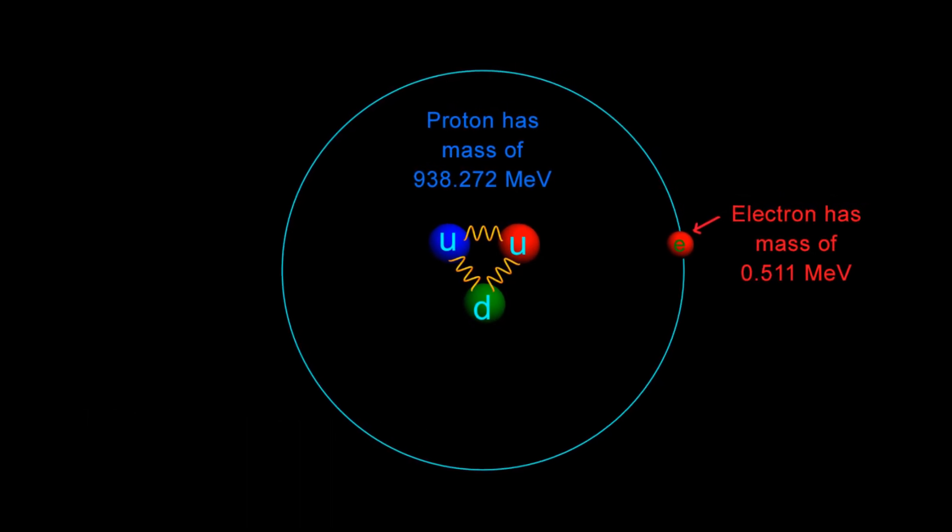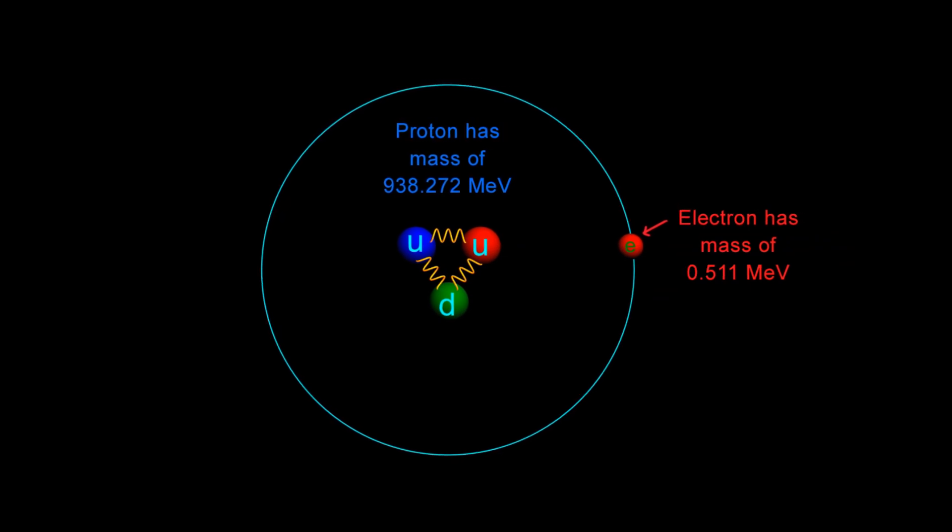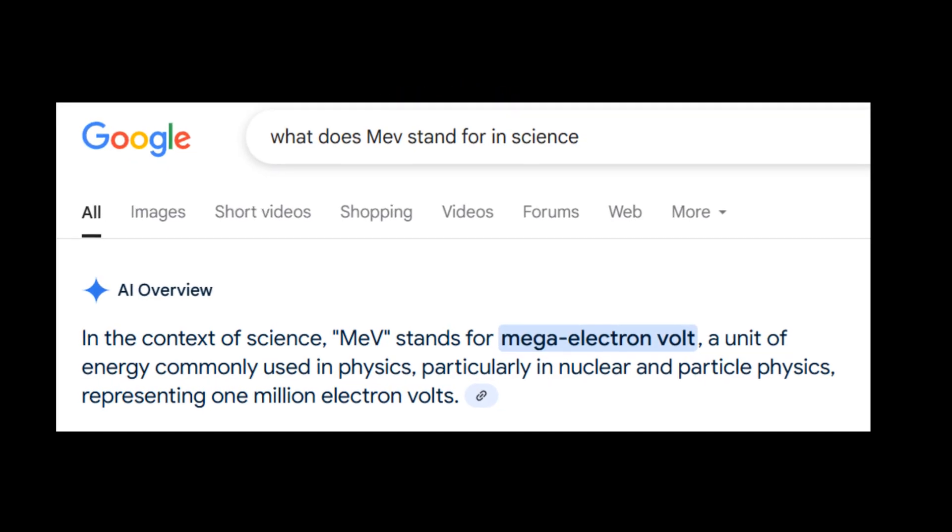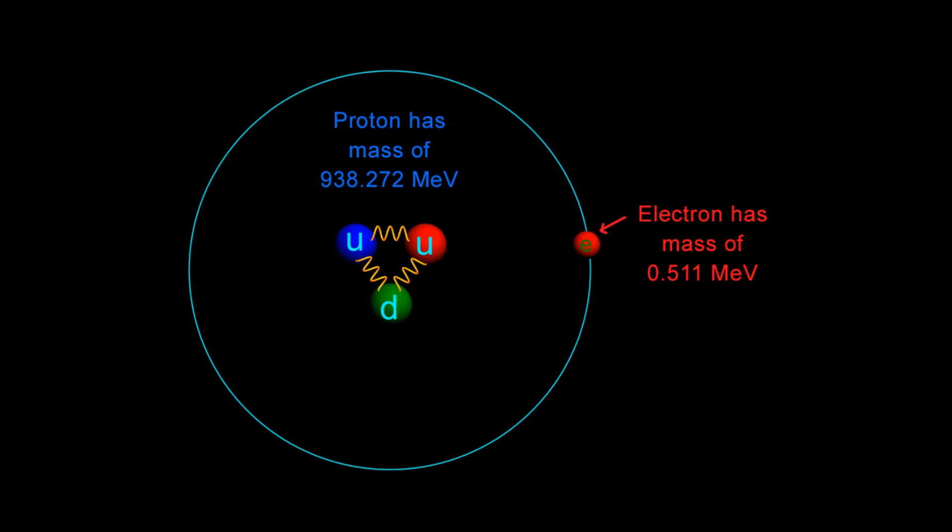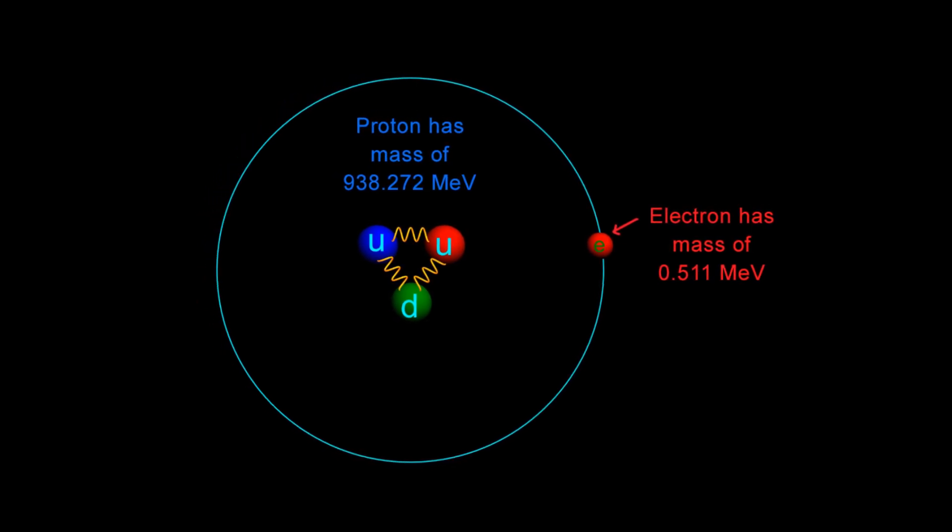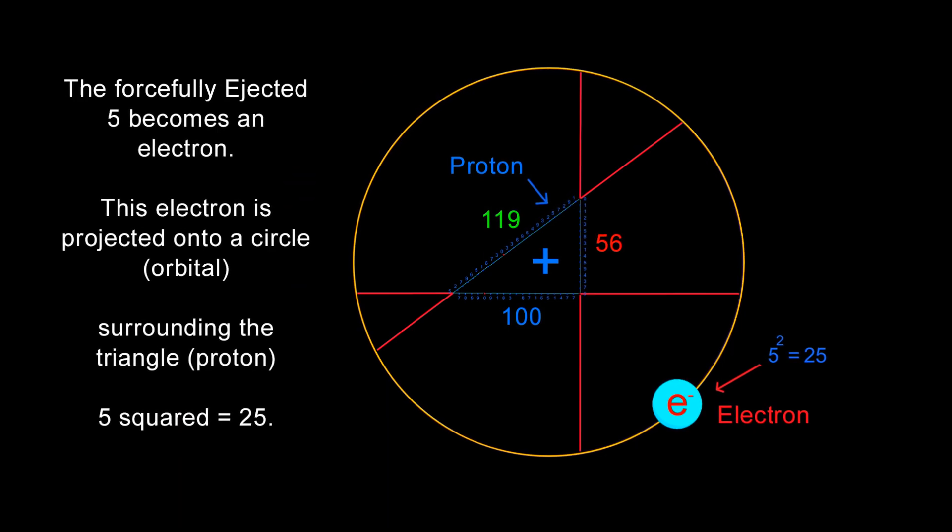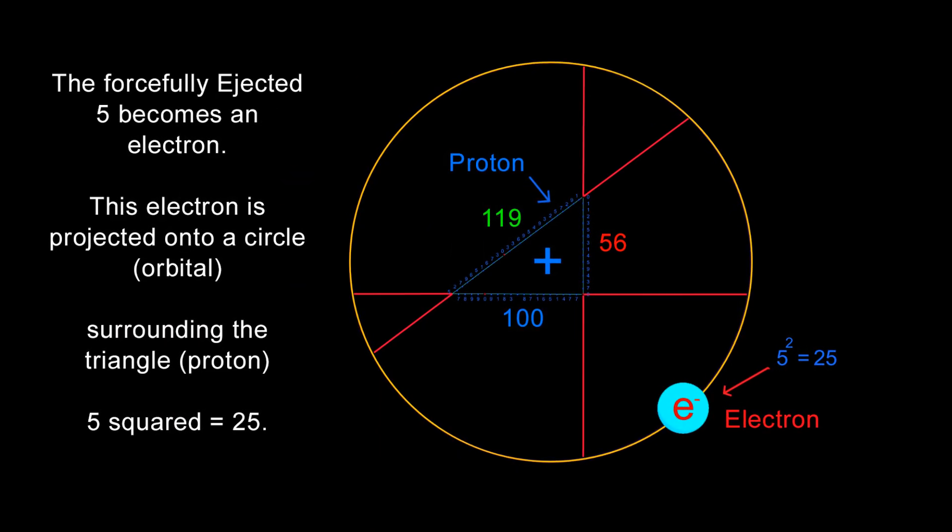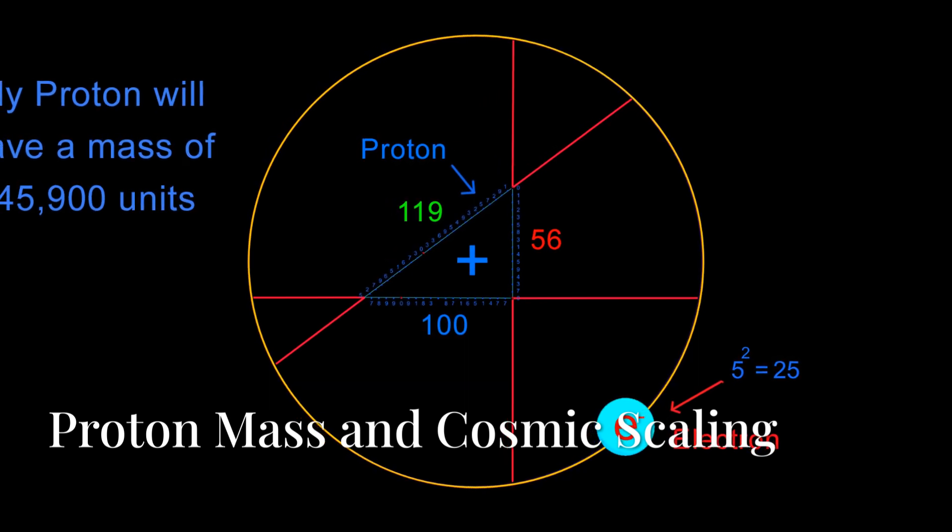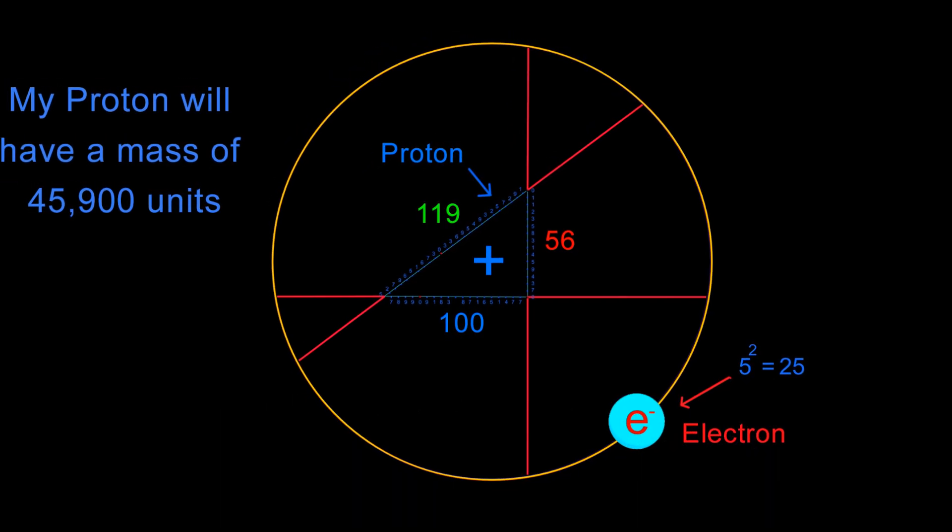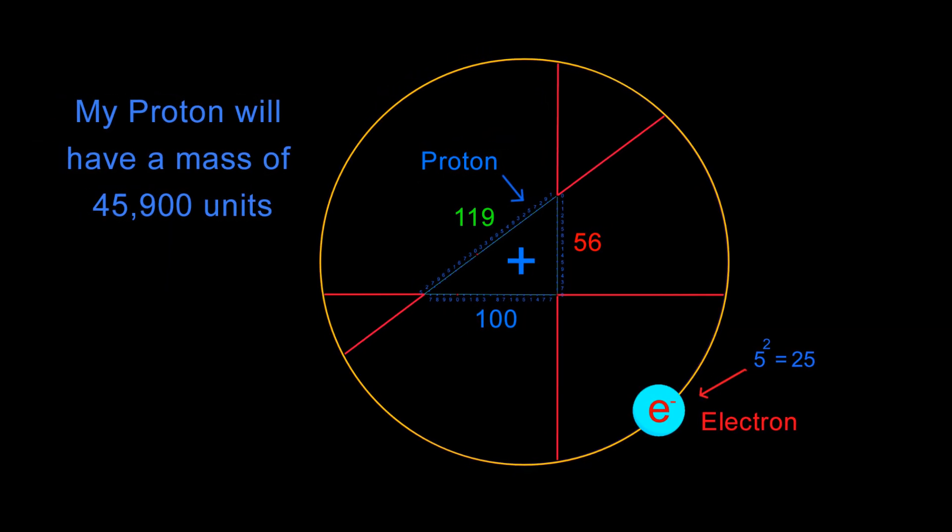When physicists measure an actual electron, they find that it has a mass of 0.511 MeV. The MeV stands for mega-electron volts. And a proton has a mass of 938.272 MeV. Remember, I am not physically measuring any particles, so my electron is simply 25 units.